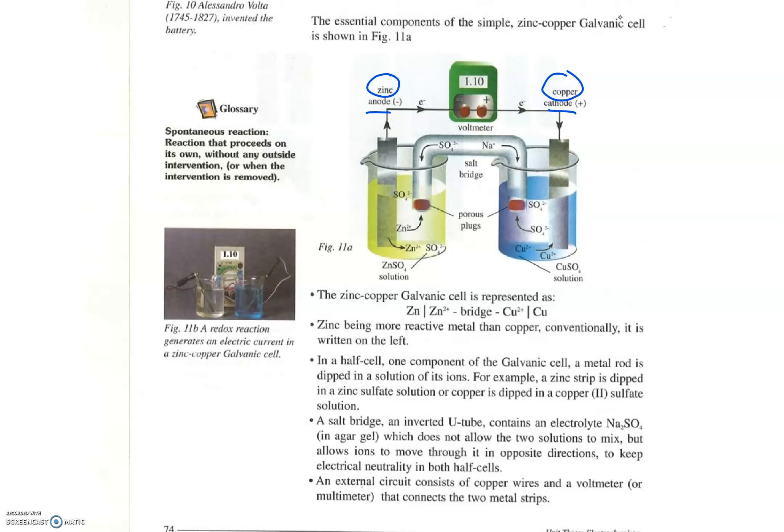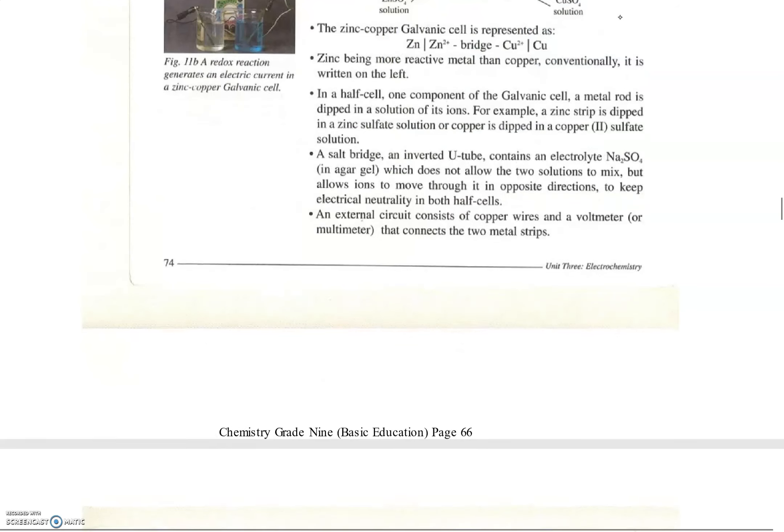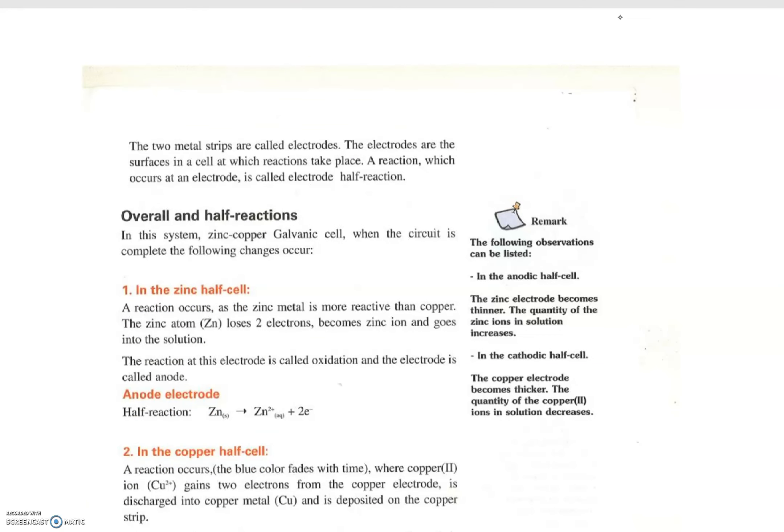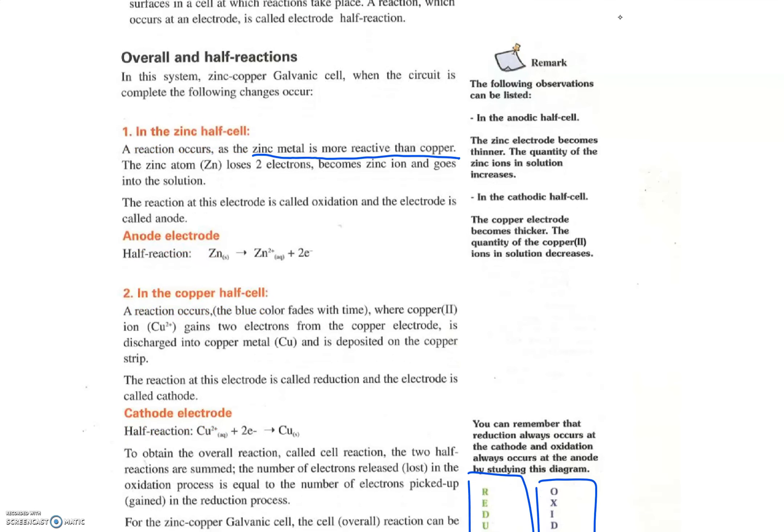Why zinc is the one that does the oxidation? Well, this is because zinc is more reactive than copper. So in the exercise it may be given or you may be asked which one is more reactive, and the one which is oxidized, that is losing electrons, is the more reactive.